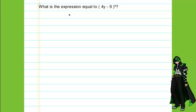What is the expression equal to 4y minus 9 squared? To begin this problem, we have to expand the 4y minus 9 squared. 4y minus 9 squared is basically 4y minus 9 multiplied by itself.